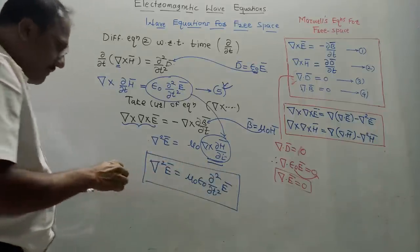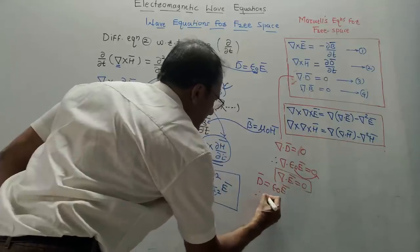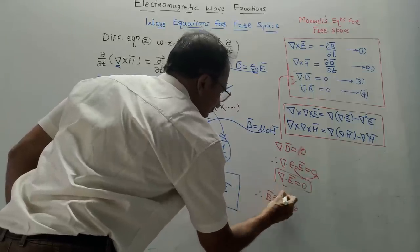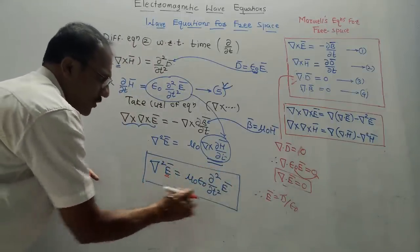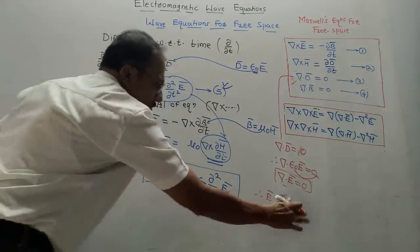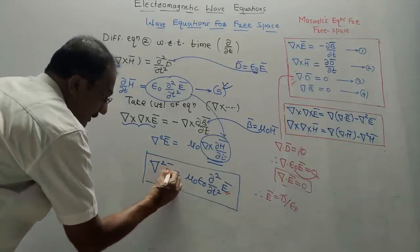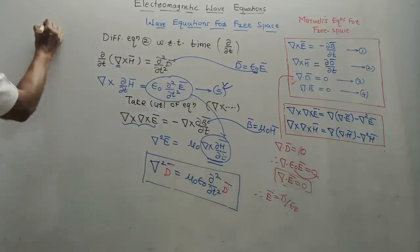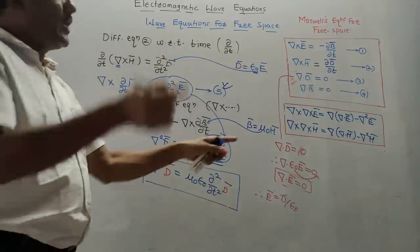This is the wave equation in terms of Ē. To get the equation in terms of D̄, we use E̅ = D̄/ε₀. Substituting into the wave equation, ε₀ cancels on both sides. So the simple trick is: in the wave equation for Ē, directly replace Ē with D̄. This is the second wave equation for free space in terms of D̄. So far we have equations in terms of Ē and D̄, derived by differentiating equation 2 and taking curl of equation 1.